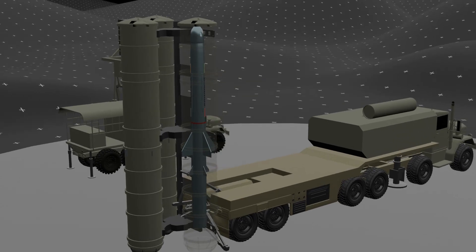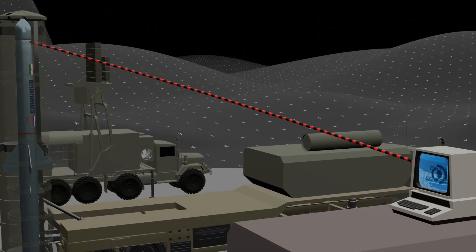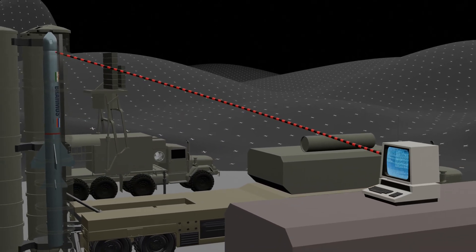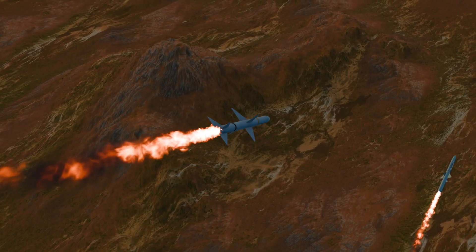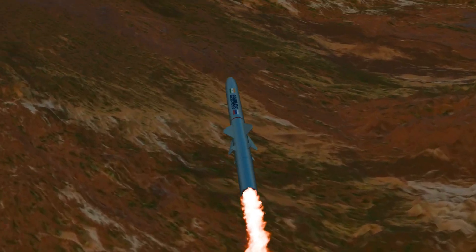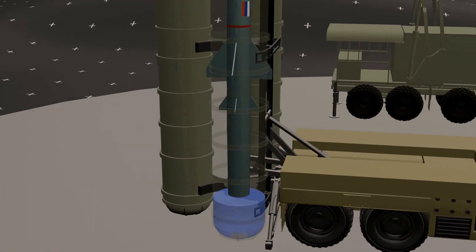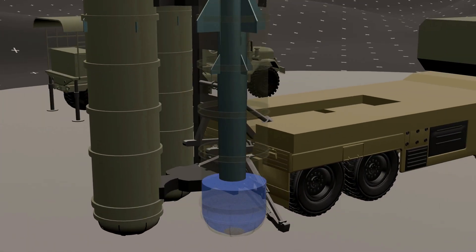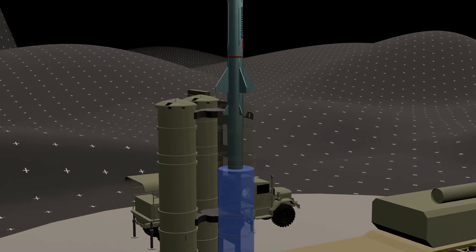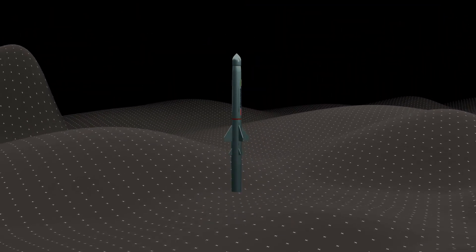Step 2: The target coordinates and flight path are pre-programmed into the missile's computer system, deciding whether it will follow a high-altitude or low-altitude trajectory. Step 3: The missile is placed in a launch tube with a gas generator at the bottom. The generator releases high-pressure gas, propelling the missile 15 to 20 meters upwards.